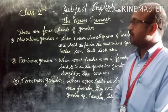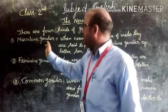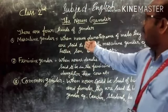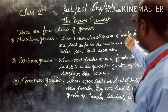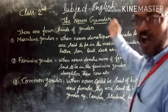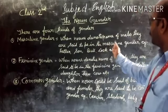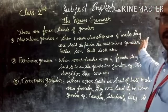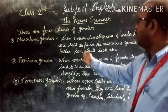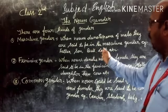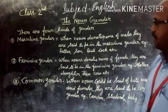The first one is masculine gender. When nouns denote the name of males, they are said to be in the masculine gender. Examples: father, son, bull, cock, etc. These belong to the masculine gender.